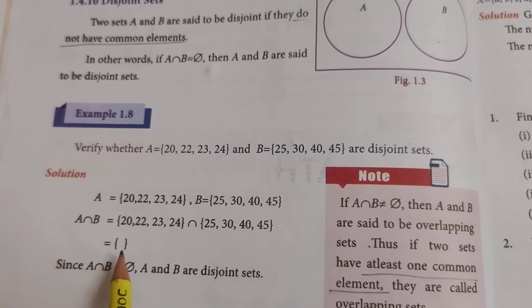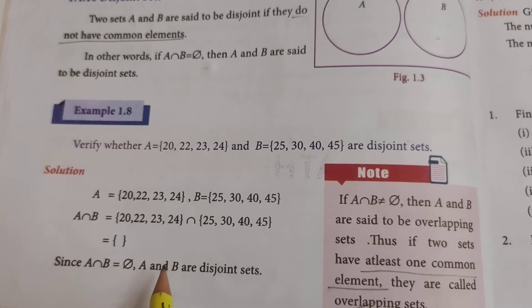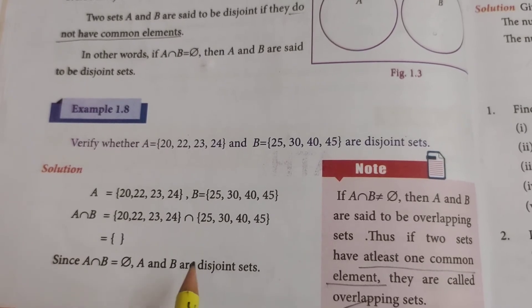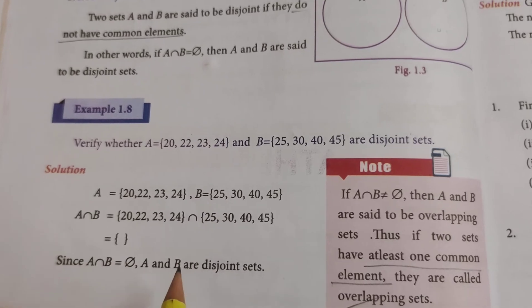Since A intersection B equals Φ, A and B are disjoint sets. So if there is no common elements between any two sets, those two sets are called as disjoint sets.